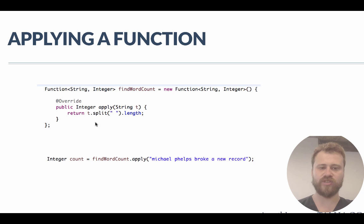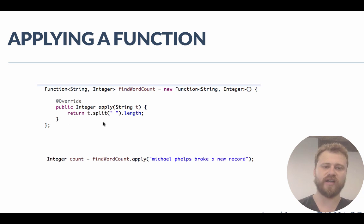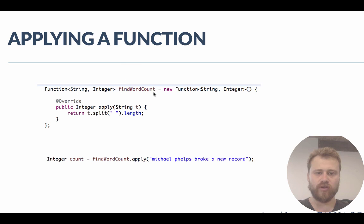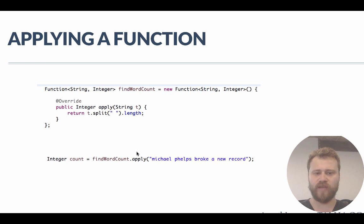After writing the method, we implement the logic: take the string, split it by blank characters to get an array of words, then get the length of that array. That gives the word count. We reference this function object as findWordCount, and since it's an ordinary object instance we can invoke apply directly, passing a sentence as the argument, and it returns the count.